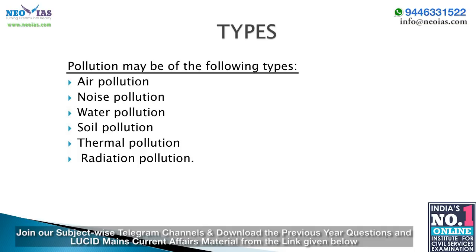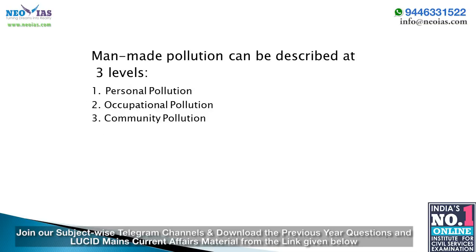Types of pollution include air, noise, water, soil, thermal, and radiation pollution. Man-made pollution can be described at three levels: personal pollution, caused by an individual and restricted to a small area (e.g., tobacco smoke, kitchen smoke); occupational pollution, due to an occupation affecting workers and surrounding areas (e.g., jute cutting, stone crushing, textile mills); and community pollution, which affects the whole community around the pollution source (e.g., thermal power plants, automobiles).